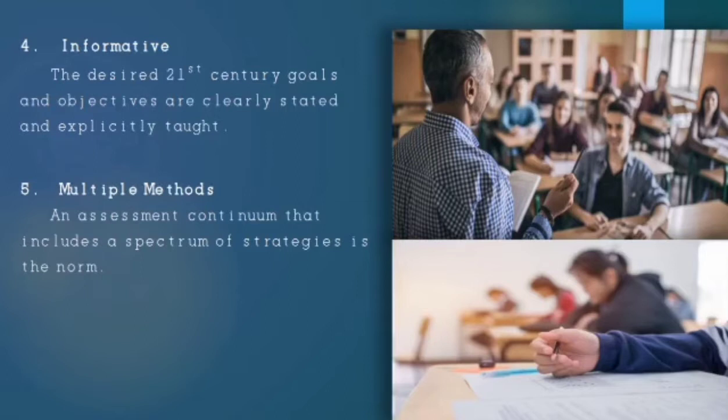In informative, it informs the students about their status. Students should be given an opportunity to build on prior learning. Self, peer, and teacher review is also important. Why? Because the student should be informed about their status. That's why self, peer, and teacher reviews are important.